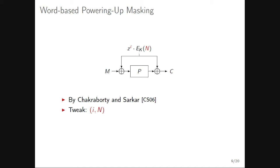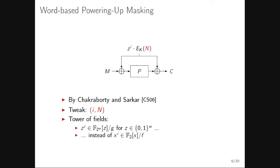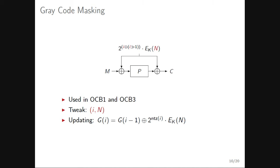Another approach is word-based powering-up masking, introduced by Chakraborty and Sarkar in 2006. The tweak is a tuple of index i and nonce n, and a tower of fields is constructed where the base value comes from F_2^w. This is more software-friendly as it uses a word-based approach rather than bitwise, but still has similar timing-leak drawbacks.